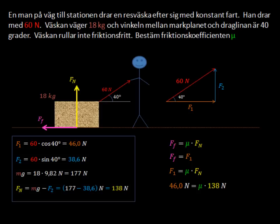And now all we have to do is solve for mu, which is this green guy right there. So it can just stay where it is, and we'll divide both sides by 138. So let's do that. So mu is 46 divided by 138, and that gives you 0.33. There we go.